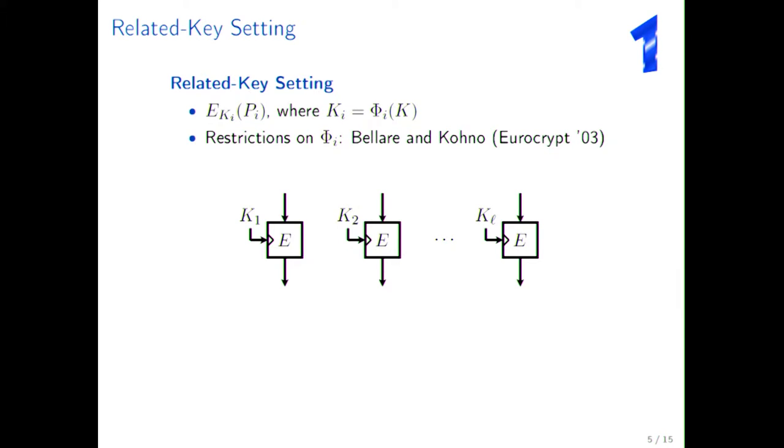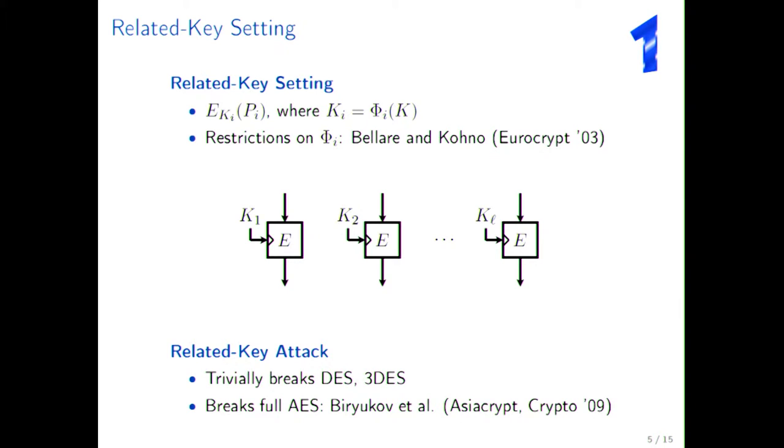Now, if you want to formalize related key security, you have to be careful how to do this. It's not so straightforward. So, I refer to Bellare and Kohno at Eurocrypt 2003 for full formalization of how to look into this problem. Now, when you look at related key attacks, they are able to trivially break DES and triple DES just by having two plaintexts and two different keys. And also, in 2009, Biryukov showed that you can also break the full AES using a related key attack. It was a very interesting moment for me to be in Leuven when this attack was announced. So, everybody was looking forward. What are the designers going to reply?